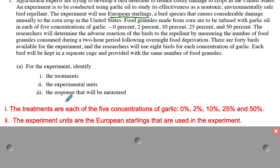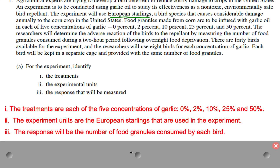And then lastly, the response that will be measured. You've got to go and measure something — use a ruler, weigh something, or count something. In this case, the response will be the number of food granules consumed by each bird. That's what they're going to measure. So that's pretty easy for Part A.